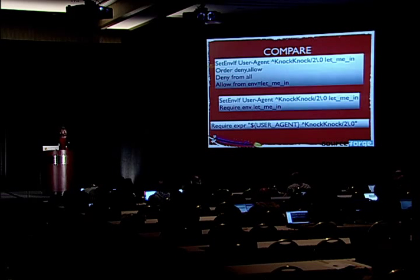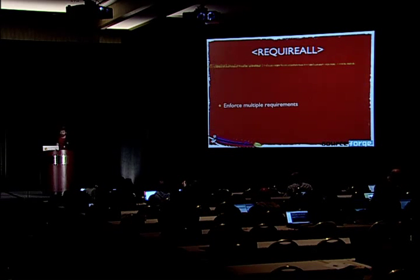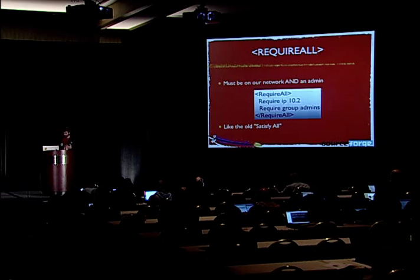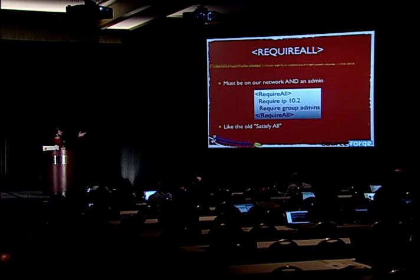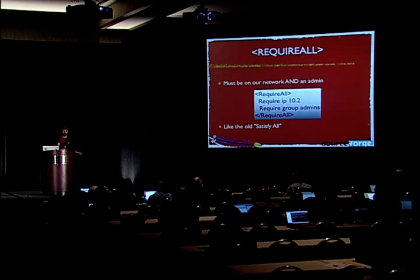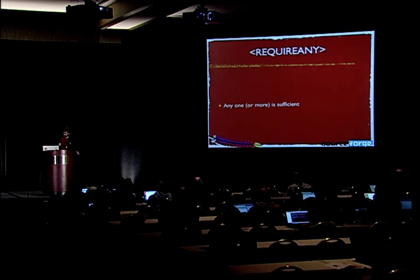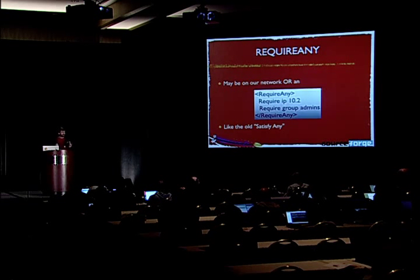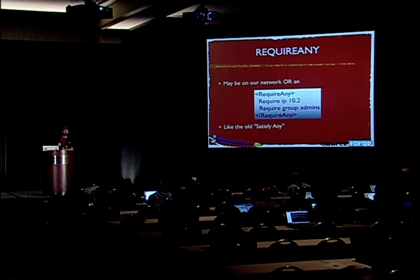The bigger advantage of this system is the ability to combine several different access control mechanisms in a single statement. There are three syntaxes: the first is RequireAll. RequireAll says everything in this block must be enforced. In this case, you have to be on the 10.2 network and you must also be in the admins group — this is identical to the old 'satisfy all' syntax. Next is RequireAny, the same as the old 'satisfy any' syntax: it's sufficient that you're either on the 10.2 network or that you're an admin.